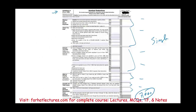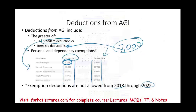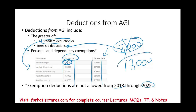But if your itemized deductions add up to $17,000 instead, you'd compare $17,000 to the standard deduction of $12,950. In that case, you'd thank the government but choose your itemized deduction of $17,000 because it's larger.